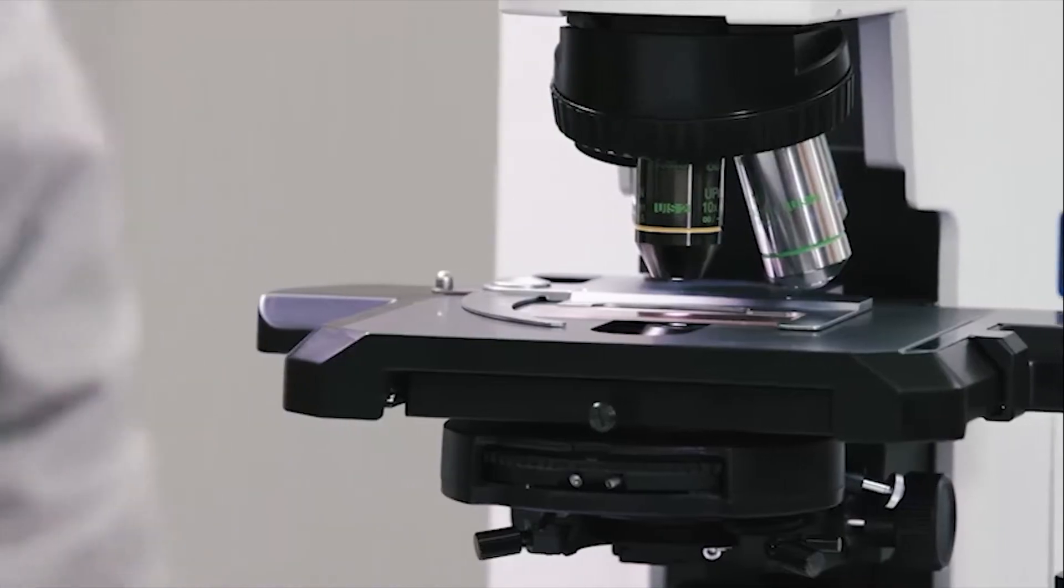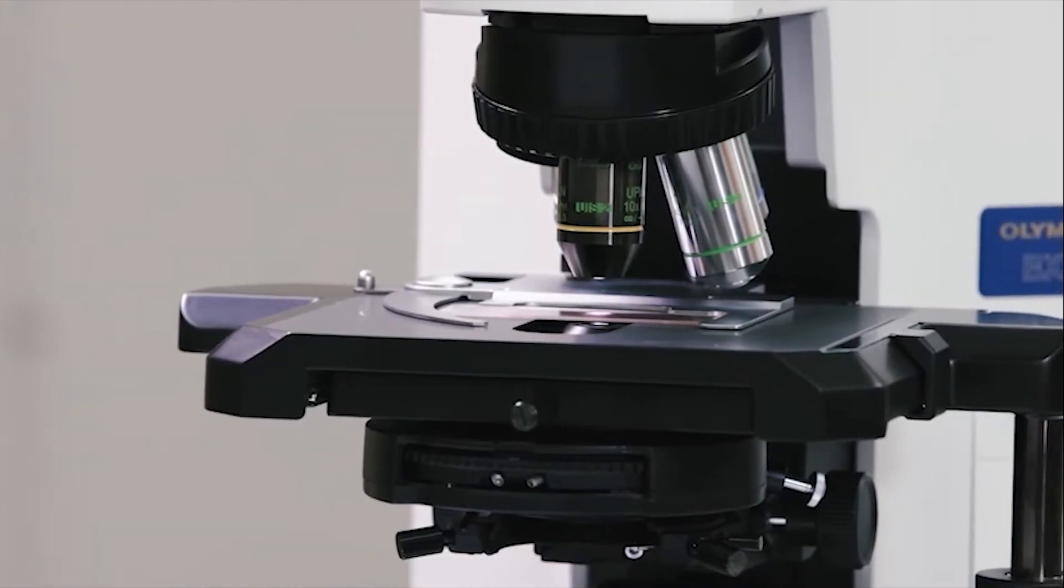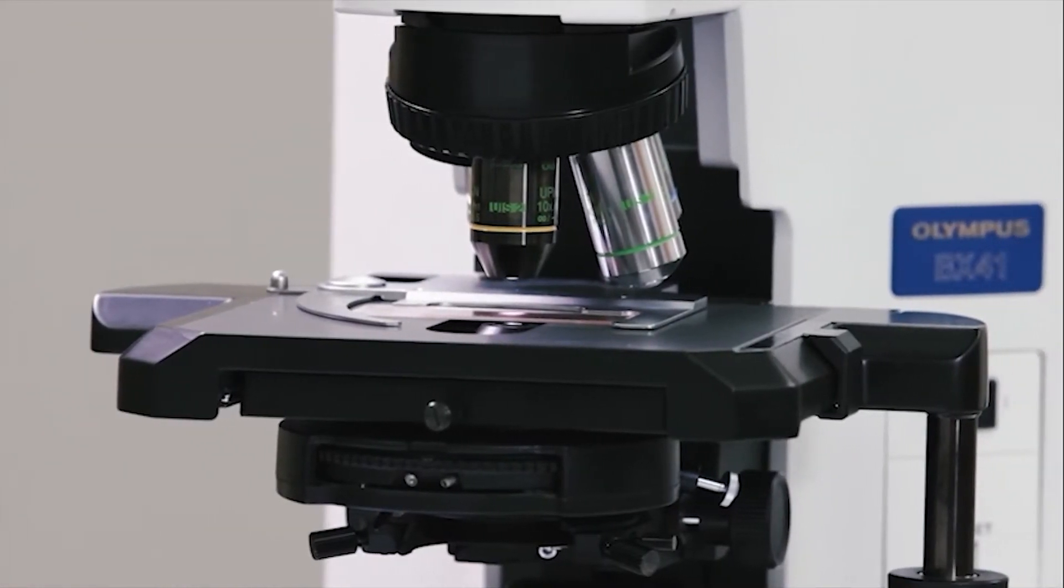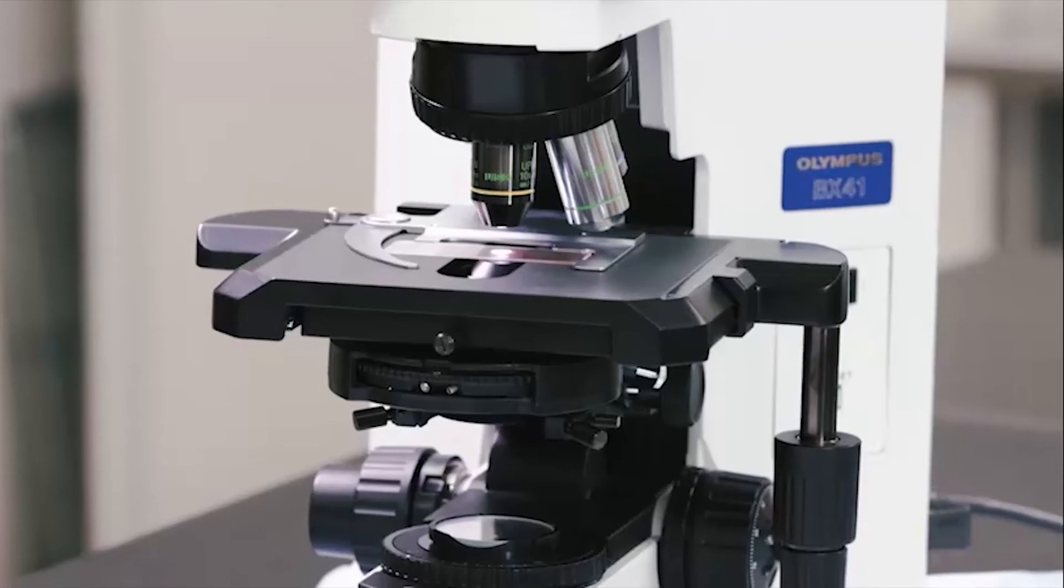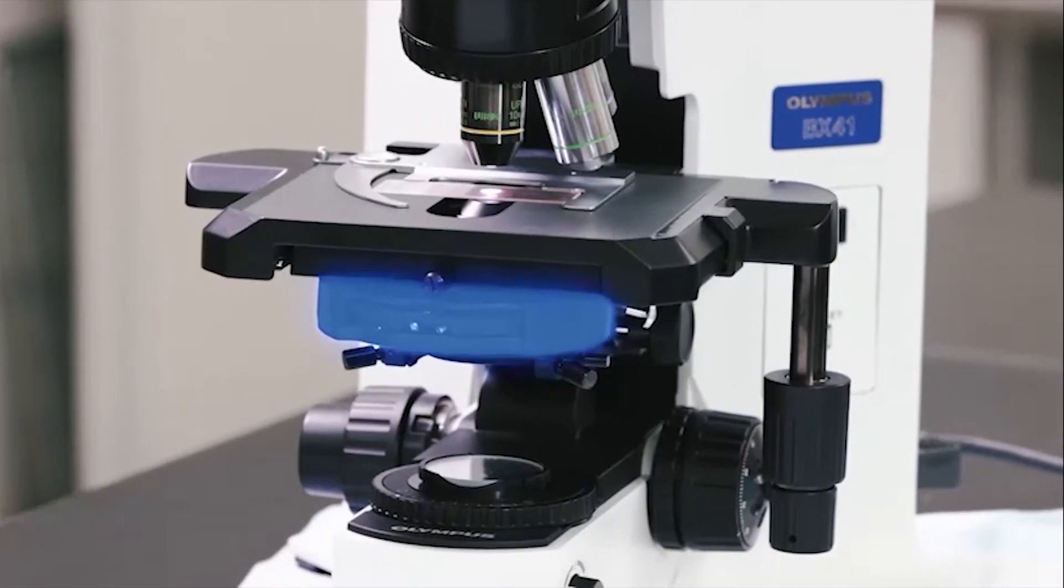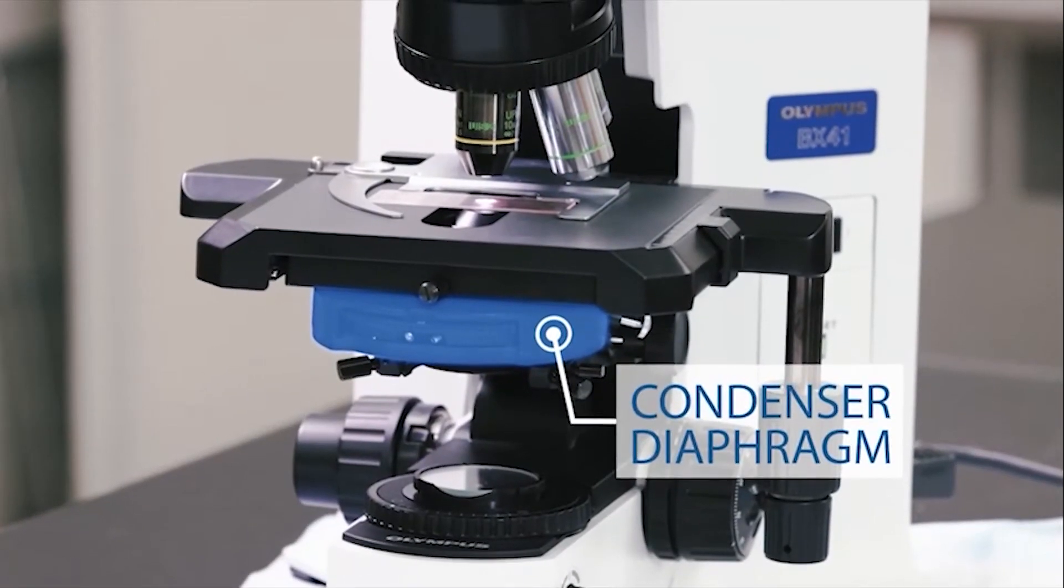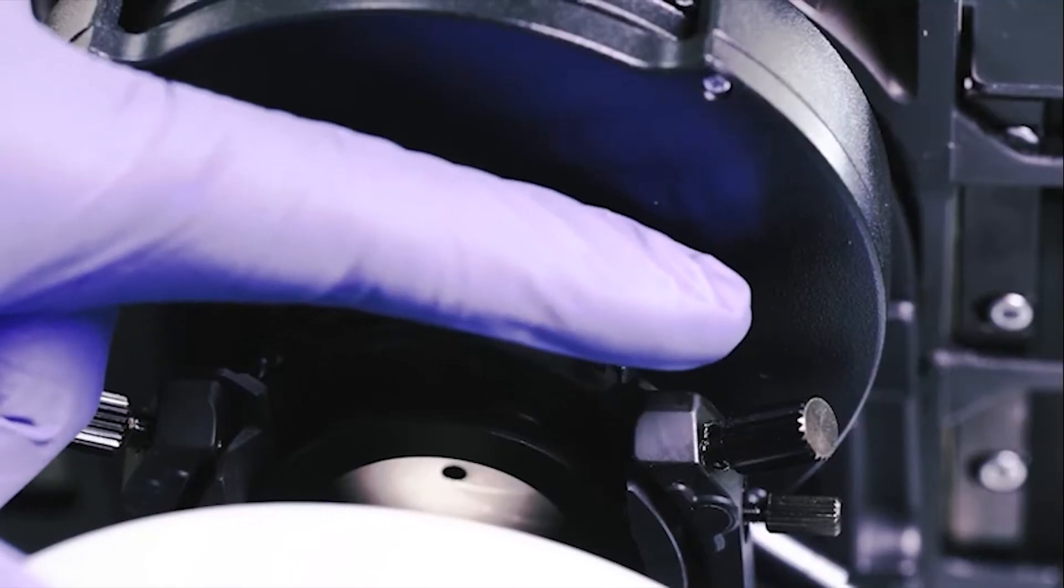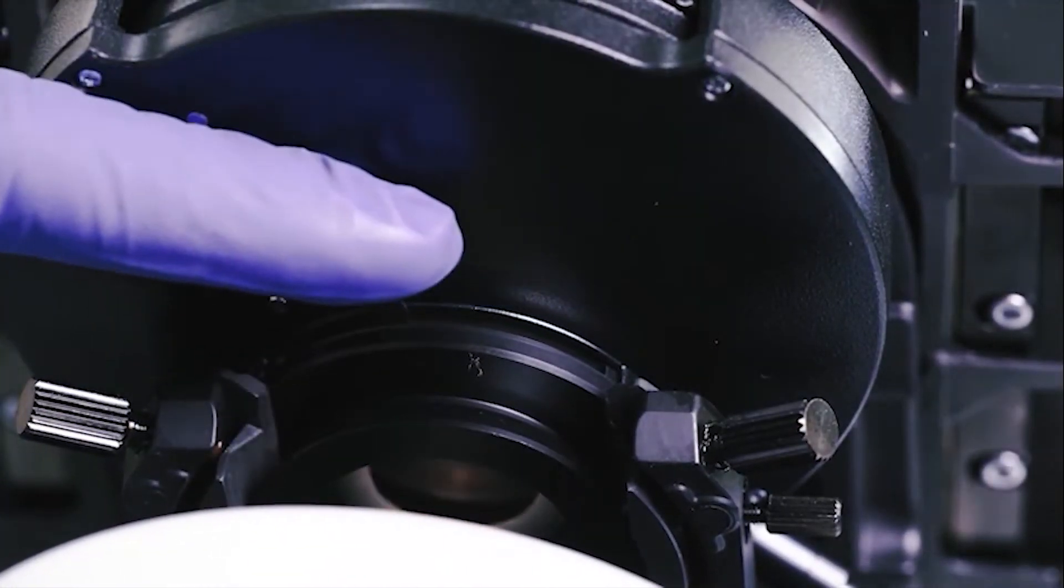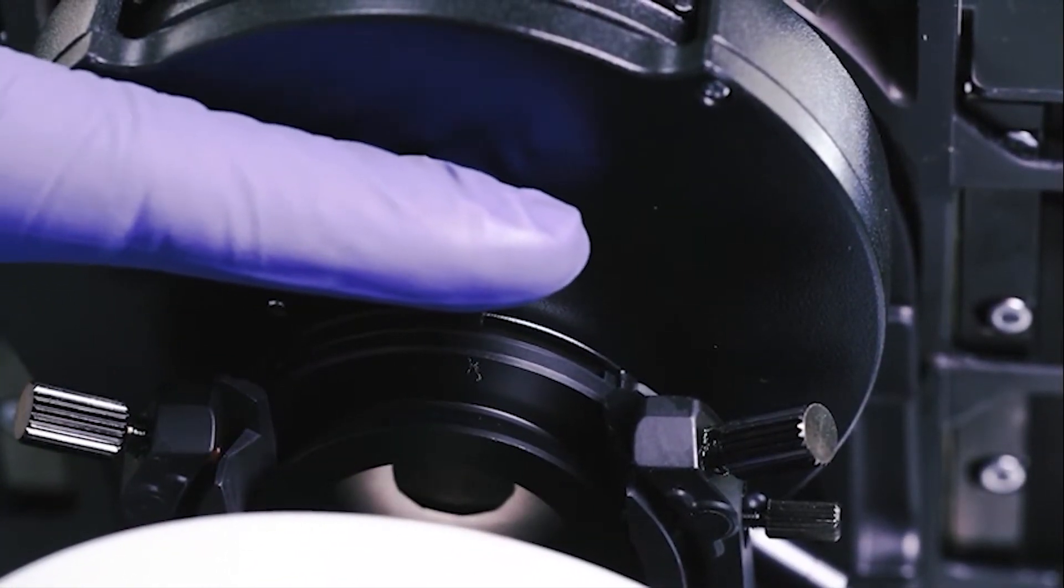In the Brightfield microscope, there are several components under the stage that are essential to obtaining a clear picture of the specimen on the slide. First is the condenser under the stage, known as the condenser diaphragm. The condenser diaphragm controls the light that illuminates the specimen, passing through the objective to the oculars.